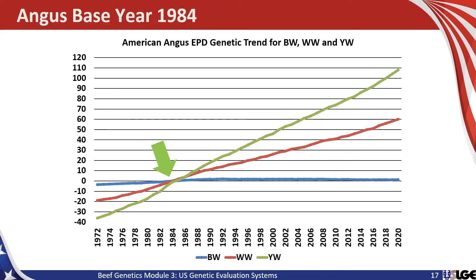Here's an example of a base year for the American Angus Association. Angus has a base that's been constant for some time, based in 1984. The interpretation here is that animals born in 1984 are forced to average zero for birth weight, weaning weight, and yearling weight. Based on the trends presented here — the blue line for birth weight, the red line for weaning weight, and the green line for yearling weight — Angus breeders have made substantial selection progress over time. Looking at calves born in 2010, their birth weight EPD was roughly about two, their weaning EPD on average was about 40 or 41, and their yearling weight EPD is about 80 — substantially different than the base year average of zero.